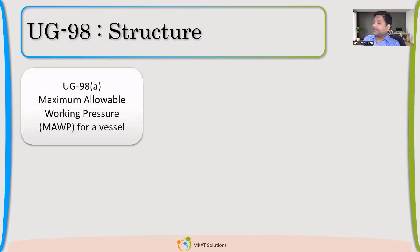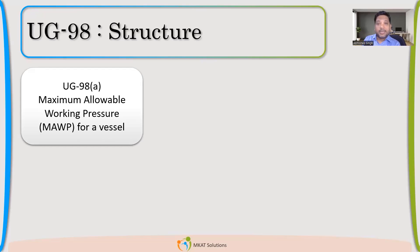So now, UG-98 structure. UG-98A talks about the MAWP of a complete vessel. There are two things. When you talk about MAWP, first of all, you have to see whether you are talking about a component or you are talking about the complete pressure vessel.